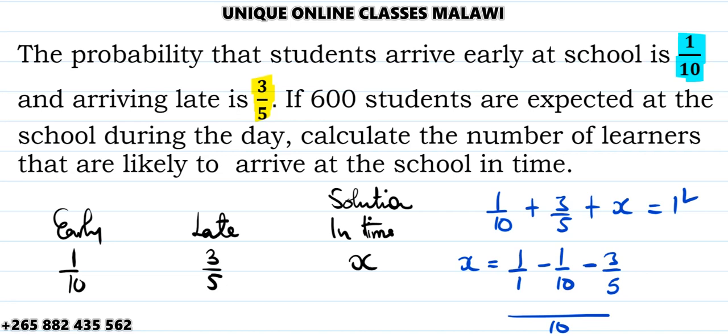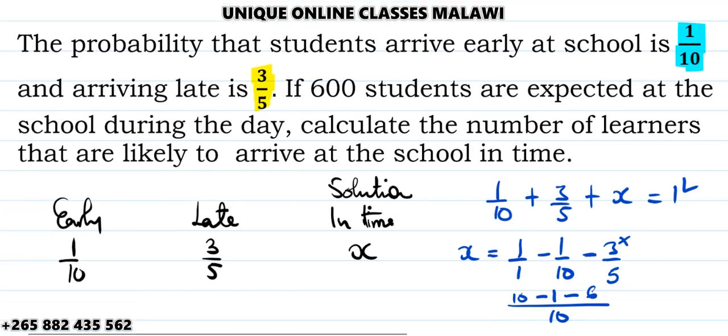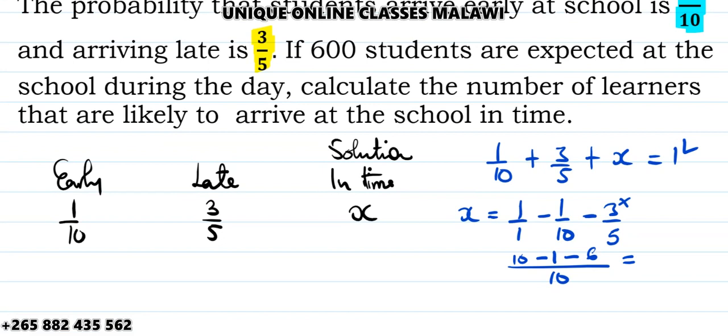10 times 10 is 10. 1 times 1 is 1. 5 into 10 is 2 times 3, which is 6. So if we combine these: 10 minus 1 is 9, minus 6 is 3. The answer is 3 over 10. The probability x for students who are going to arrive on time is 3 over 10.